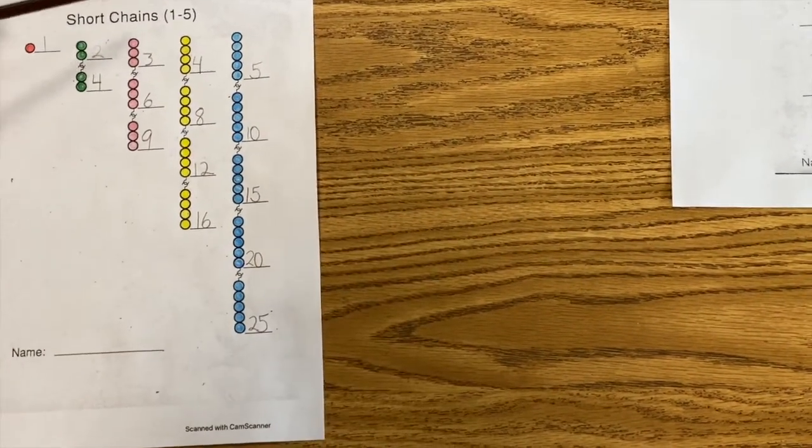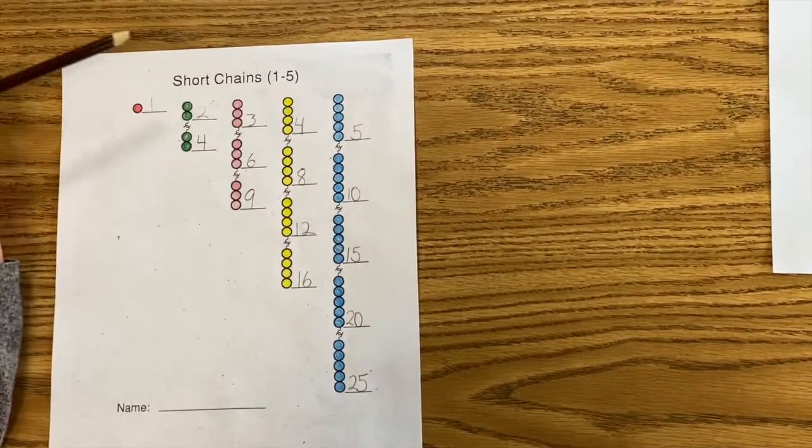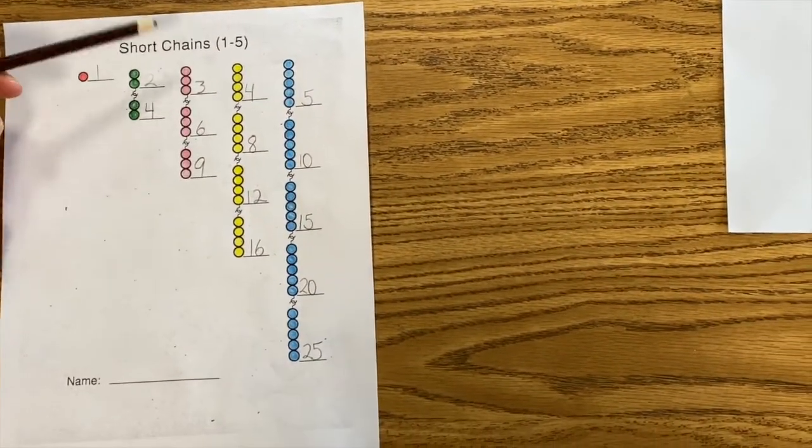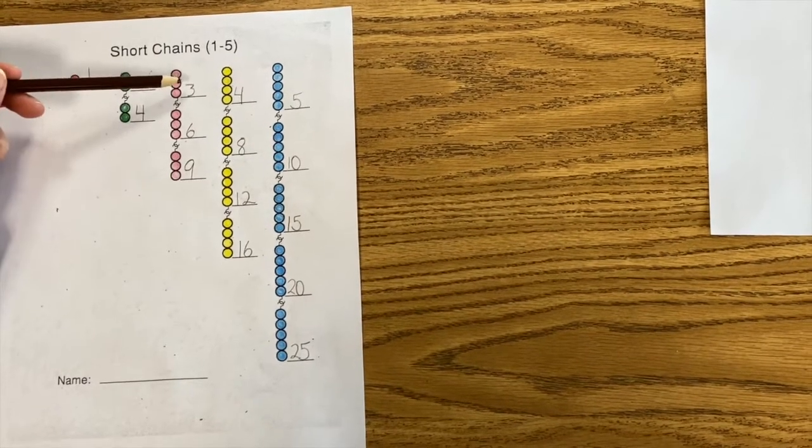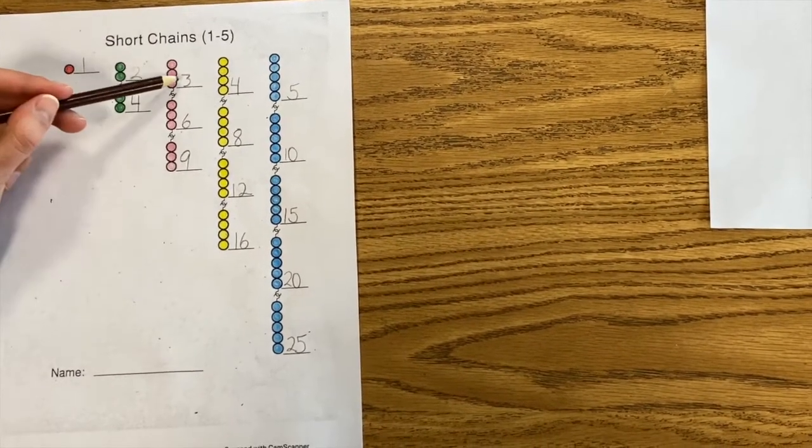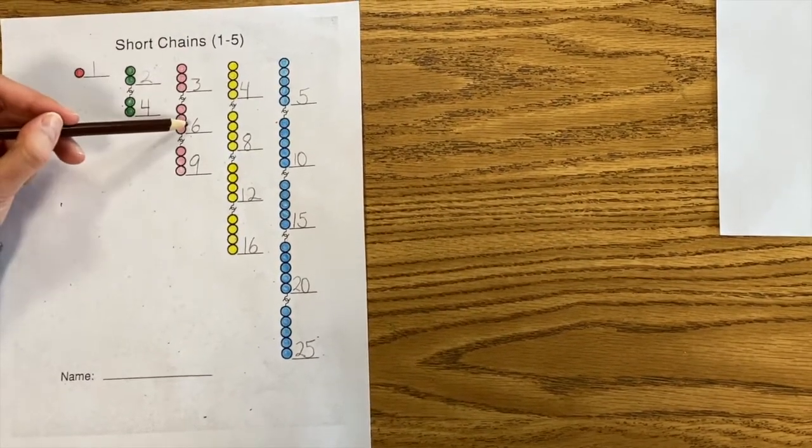Now I can go back and practice my skip counting. Let's look at the threes. The three numbers I wrote. Three, six, nine.